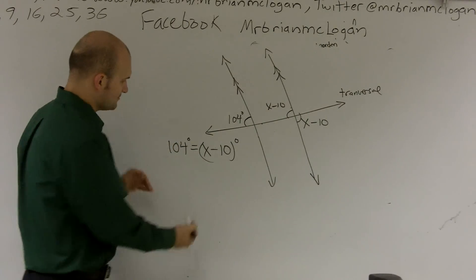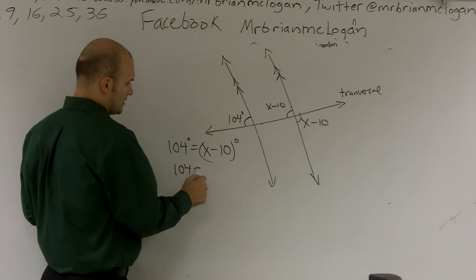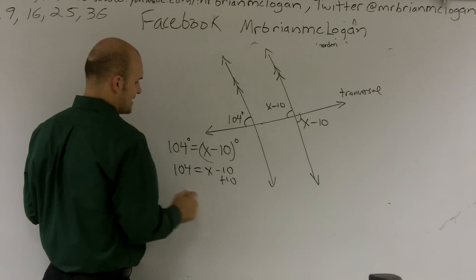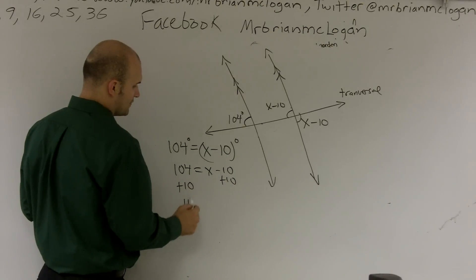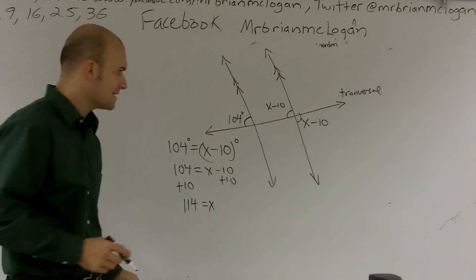But when you do that, now I can solve my problem. So 104 equals x minus 10, add 10 onto both sides, and I get 114 equals x. So that's how you use it with corresponding angles.